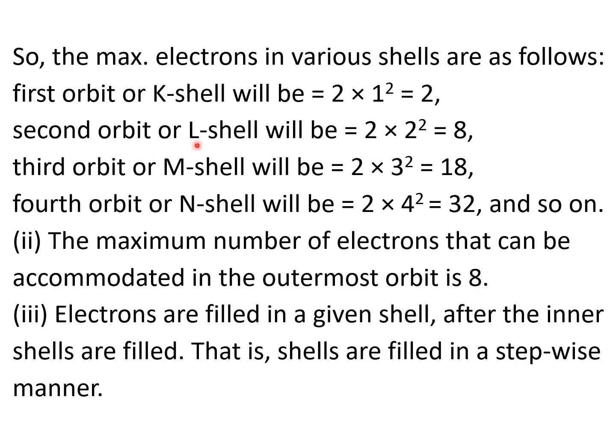Second orbit or L shell will be 2 × 2² that is 8 electrons. Third orbit or M shell will be 2 × 3², 3 × 9 into 2 is 18. It means third shell can accommodate 18 electrons. Fourth orbit or N shell will be 2 × 4² that means 32 and so on.